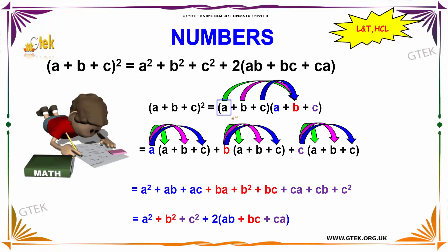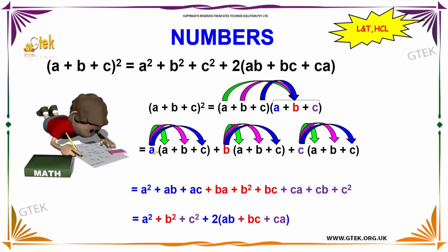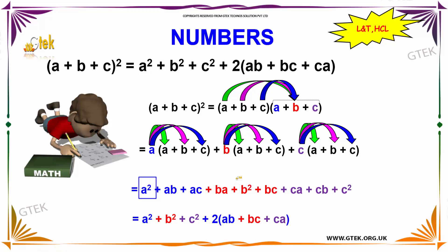We multiply a into a plus b plus c, then b into a plus b plus c, then c into a plus b plus c. So: a into a is a square, a into b is ab, a into c is ac. b into a is ba, b into b is b square, b into c is bc. c into a is ca, c into b is cb, c into c is c square.